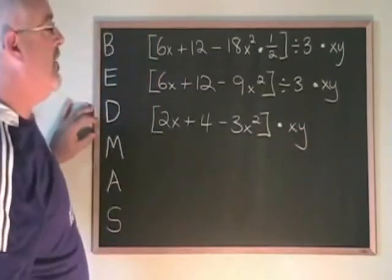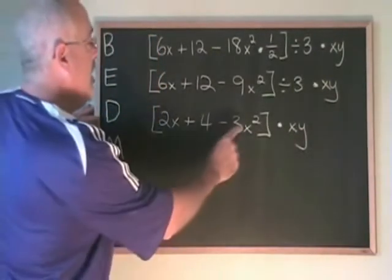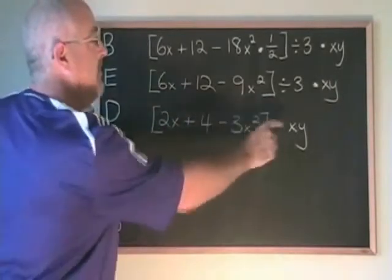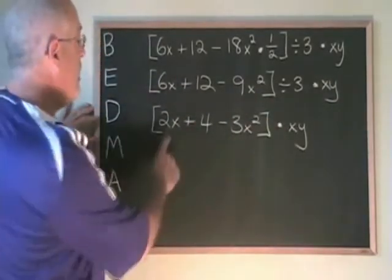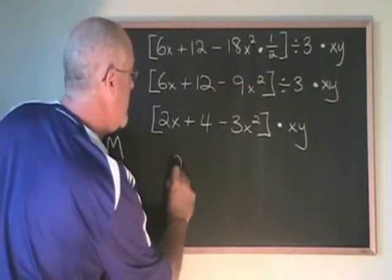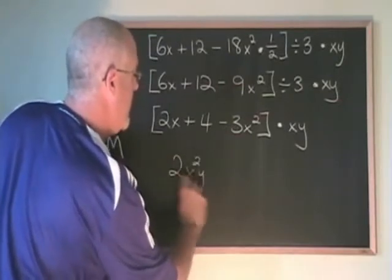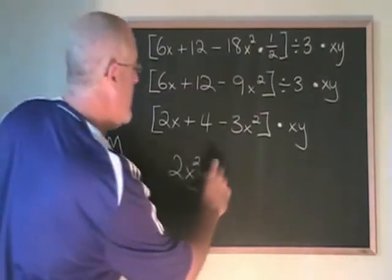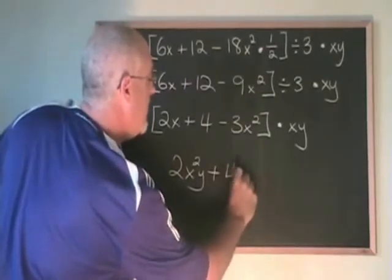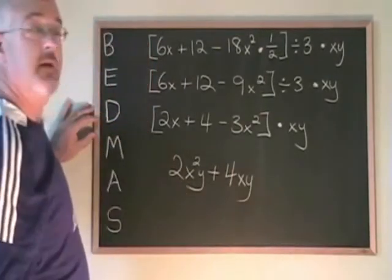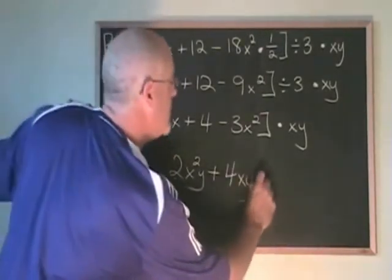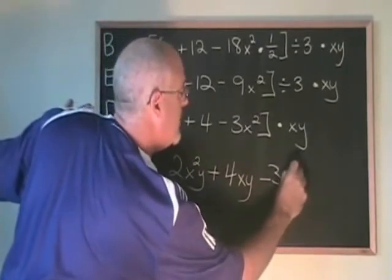And now we can see that the entire bracket is being multiplied by xy. 2x times xy is 2x squared y. 4 times xy is 4xy minus 3x squared times xy is minus 3x cubed y.